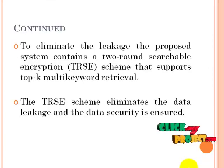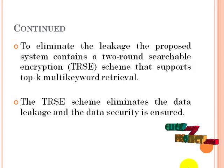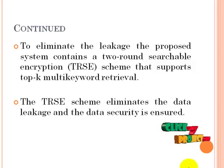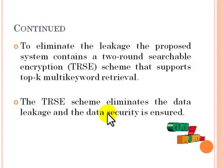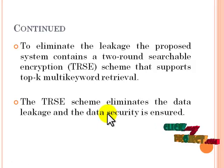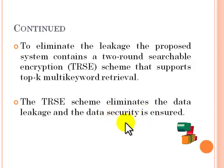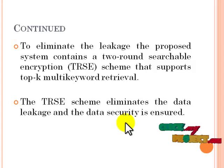The goal of the proposed system is to eliminate data leakage during server-side ranking. To eliminate this leakage, the proposed system introduces a two-round searchable encryption, which contains a vector space model and homomorphic encryption. The vector space model provides accurate search results, and the homomorphic encryption is used for the ranking process on the user side.